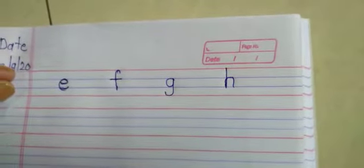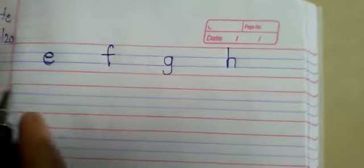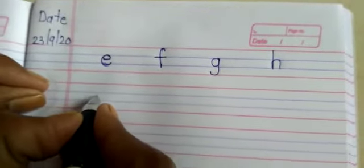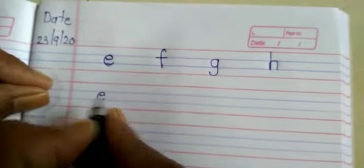Understood? I will show you once again. Write with me. In these two blue lines write down small e like this.